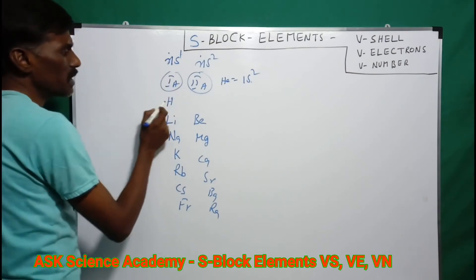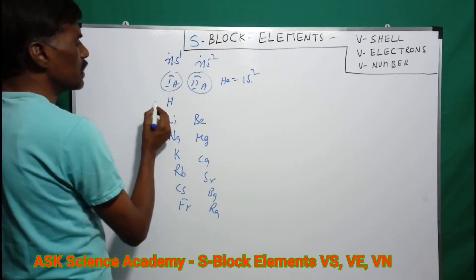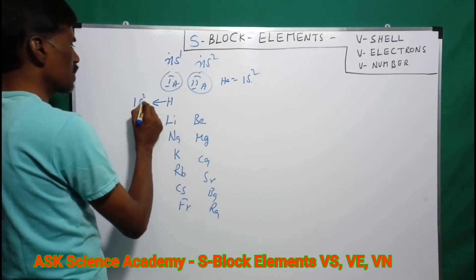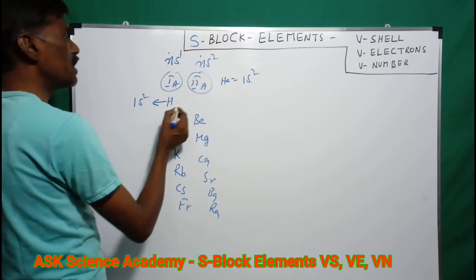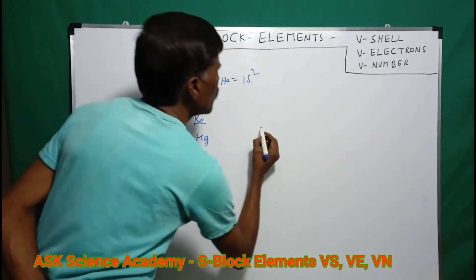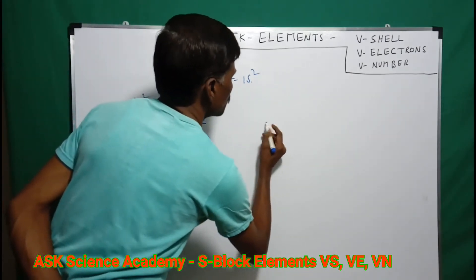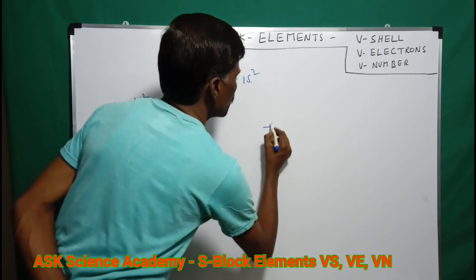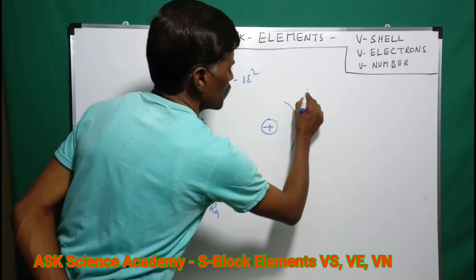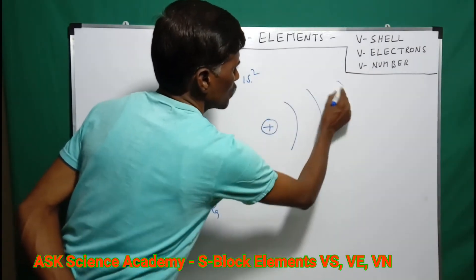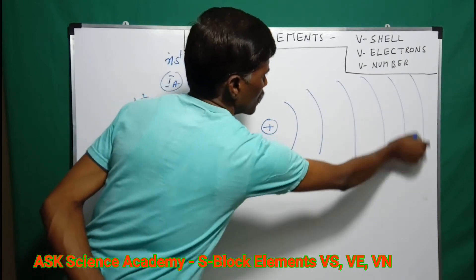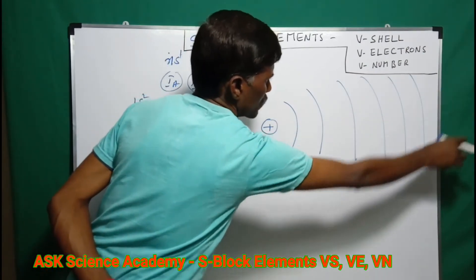So, ns1 corresponds to the first group. For hydrogen, the configuration is 1s1, meaning it is in the first period. An atom has a nucleus, then first shell, second shell, third shell, fourth shell, fifth shell, sixth shell, and seventh shell.